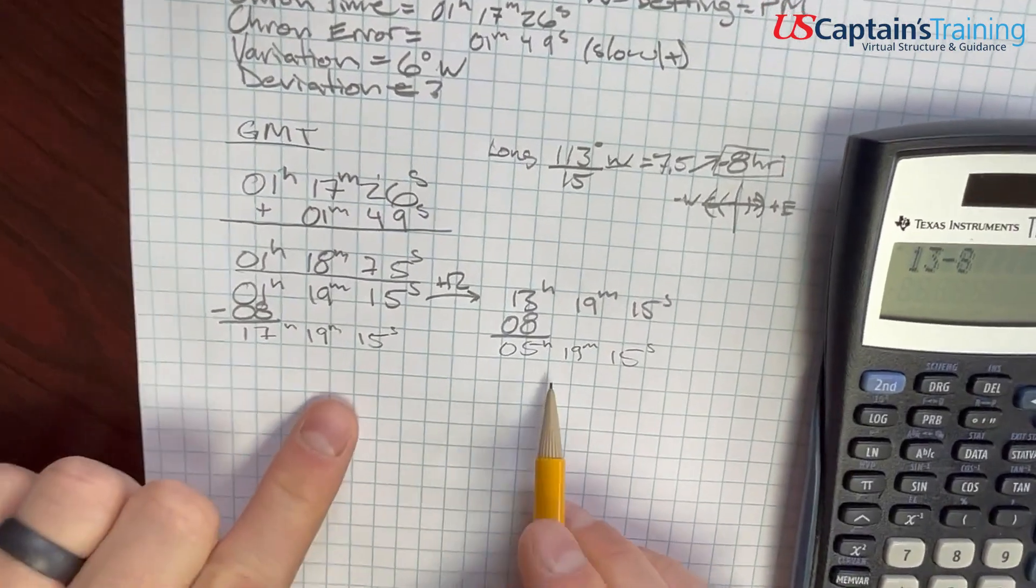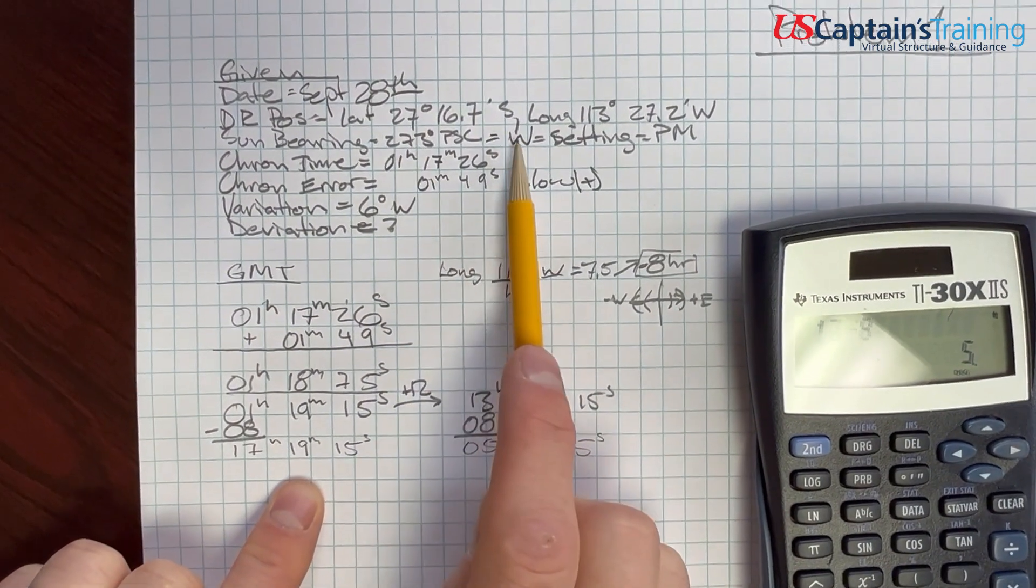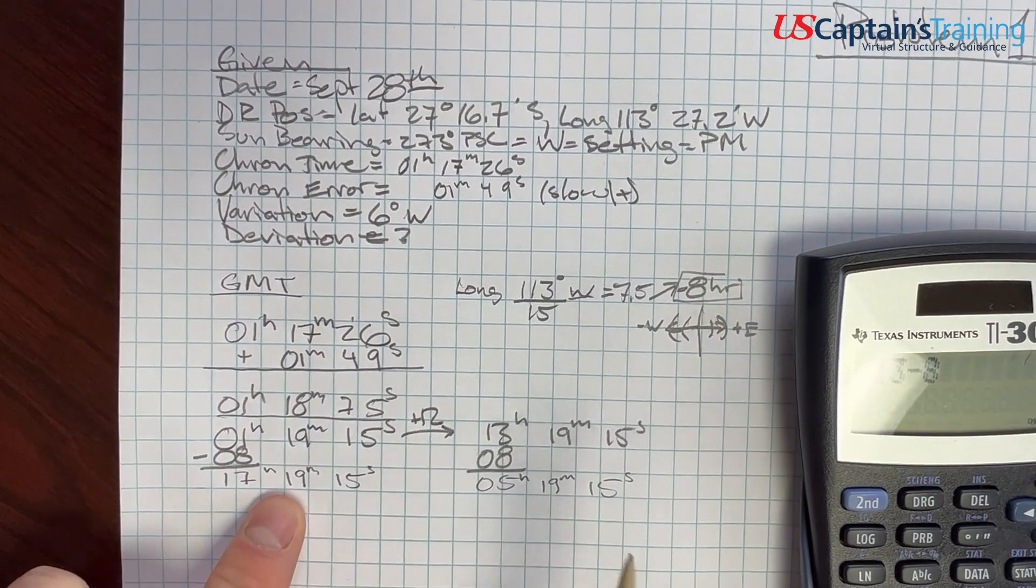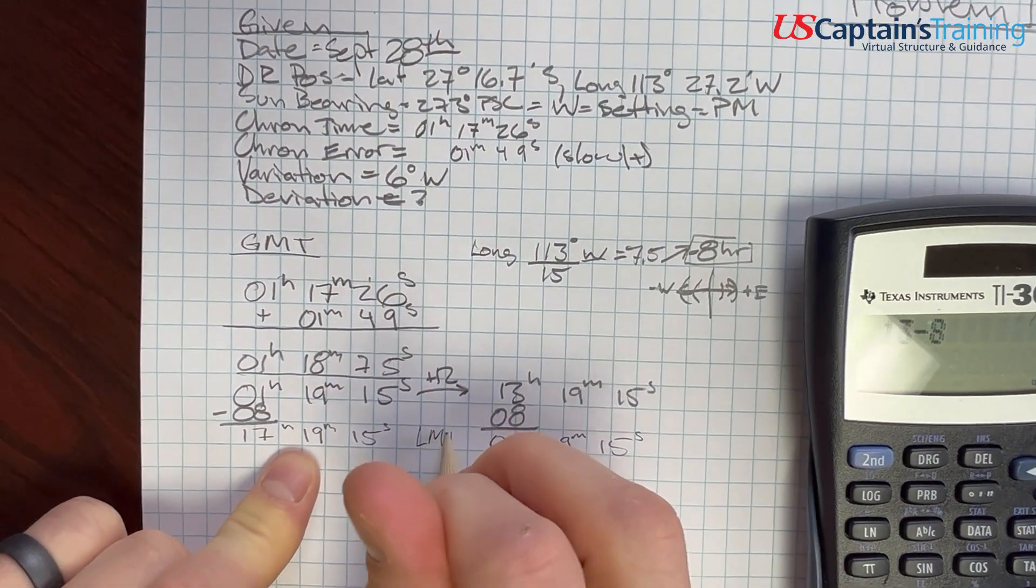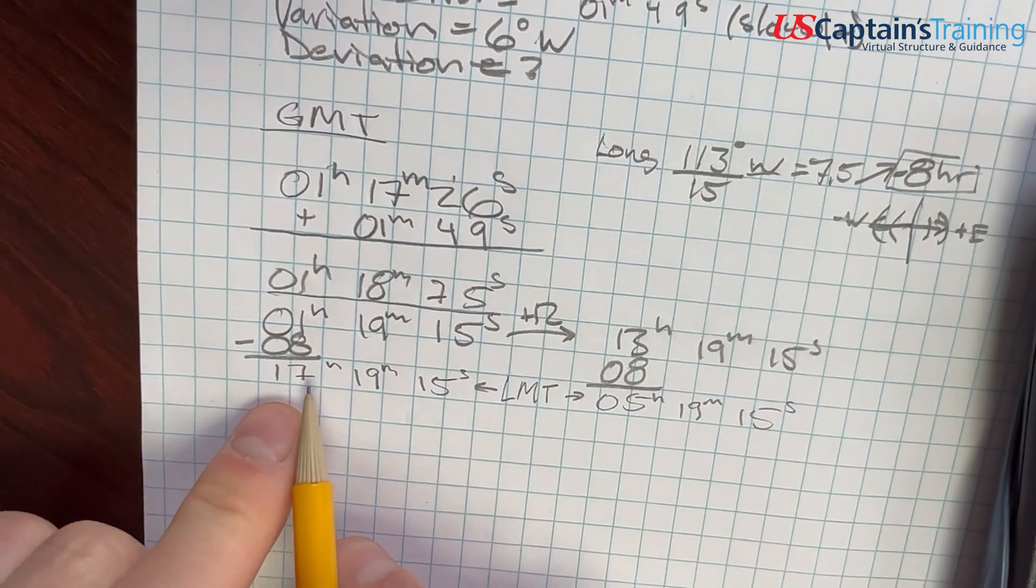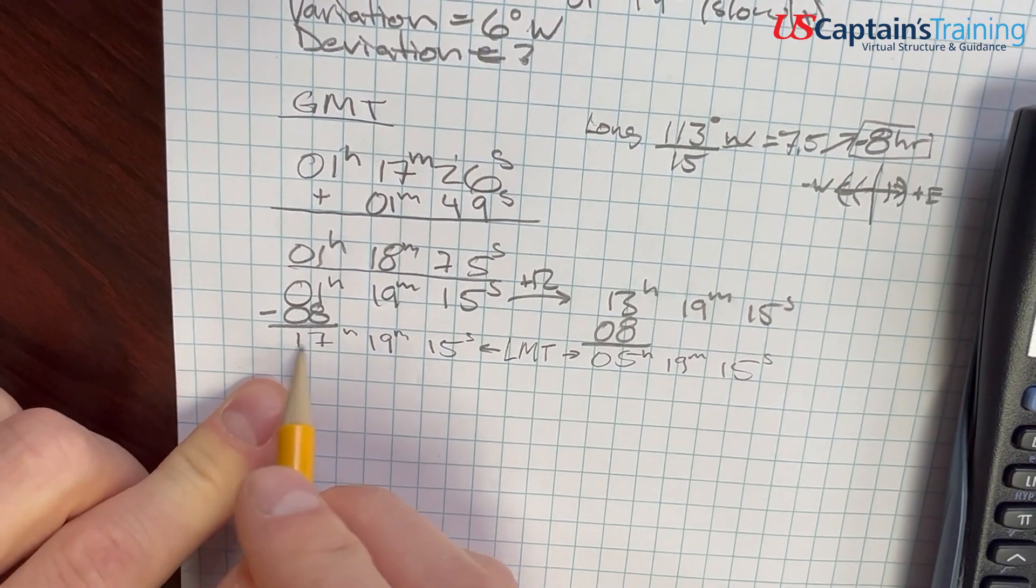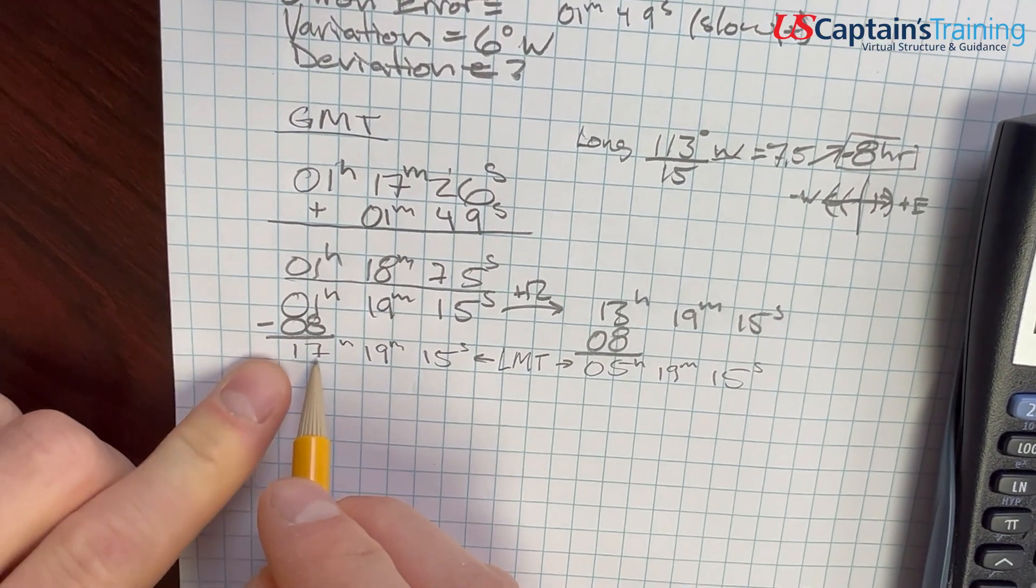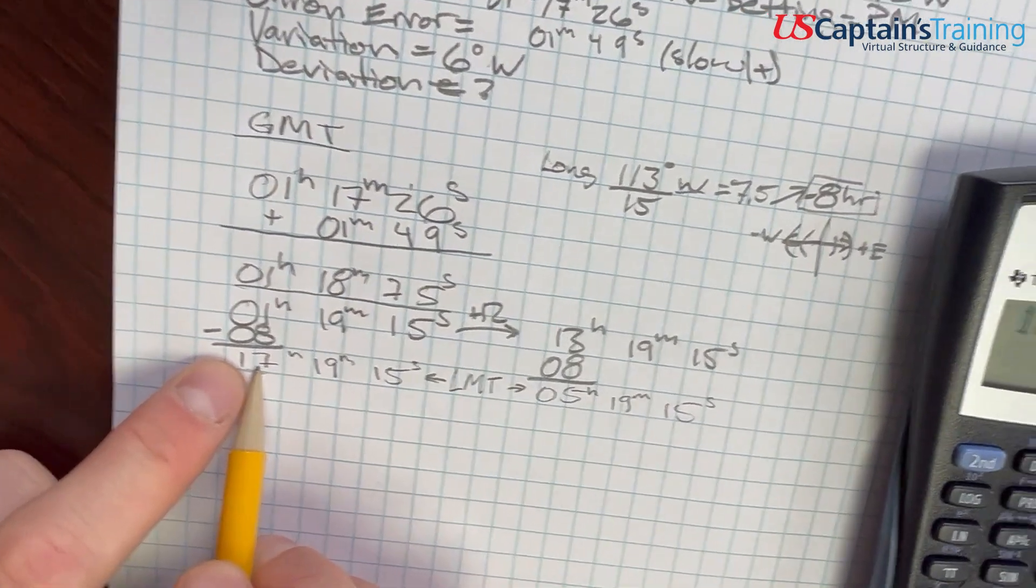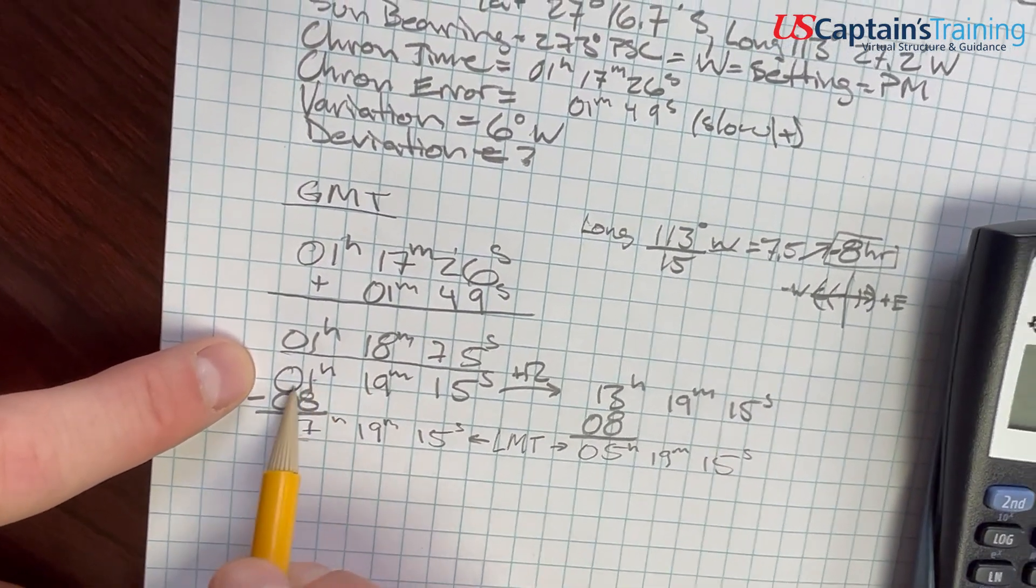Which one? We saw the sun at 273°, which means it's in the west, setting. So which of these local mean times is correct? If it's setting, it's PM. So we're at this 17h 19m 15s - the 5 PM one. But we don't use our LMT. We back up. This is our Greenwich mean time.